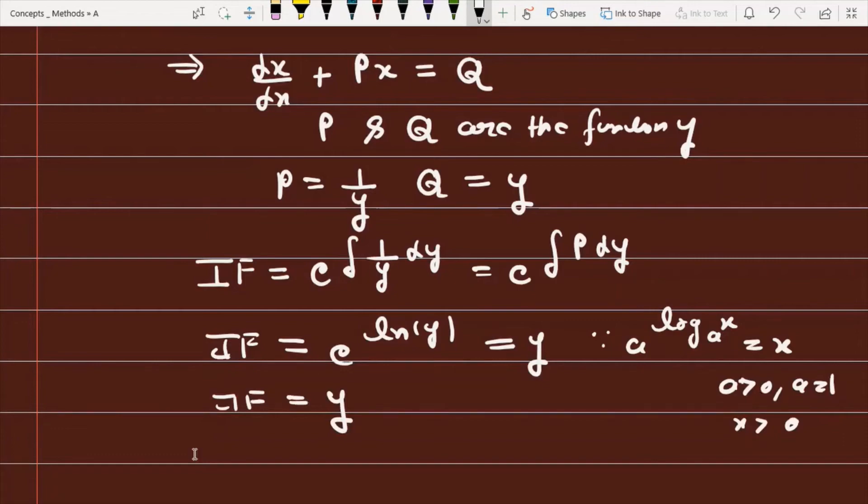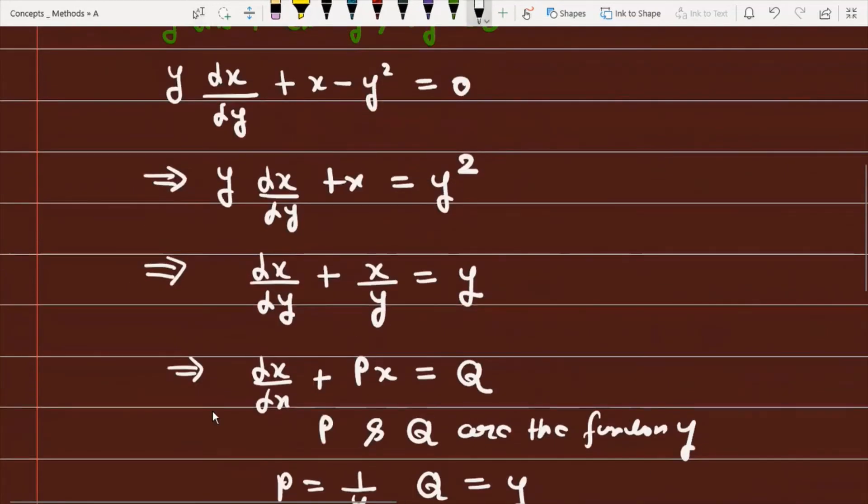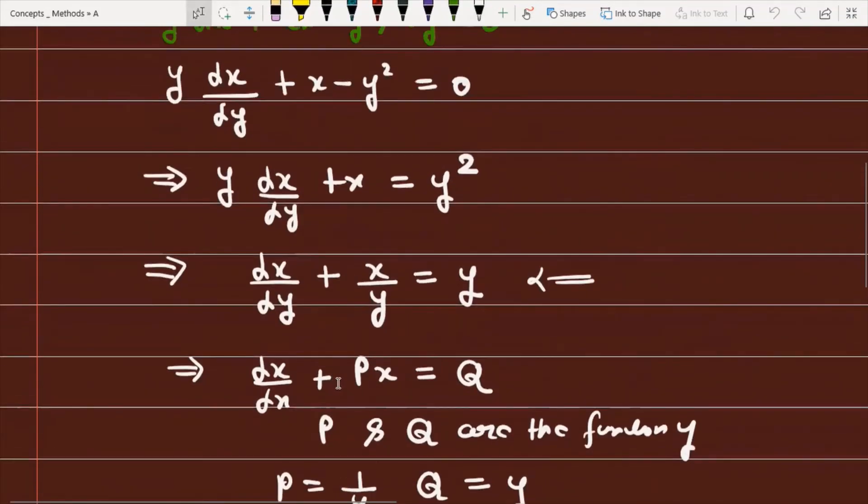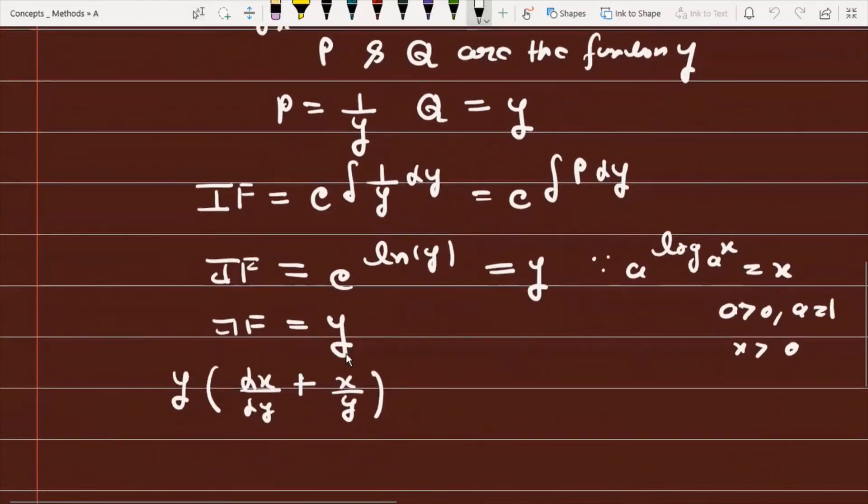We multiply both sides of the differential equation by y. When you multiply both sides, this becomes: y(dx/dy) + x = y².